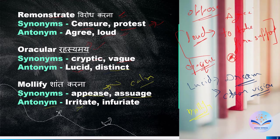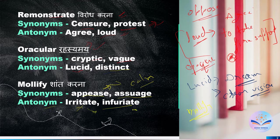What is the opposite of mollify? To be angry at someone, to be irritated. 'Irritate' I-R-R-I-T-A-T-E means to be angry at someone. And 'infuriate' I-N-F-U-R-I-A-T-E also means to make someone very angry. These are the antonyms — related words. Okay.